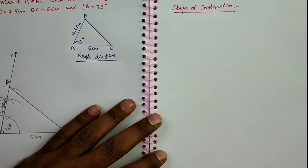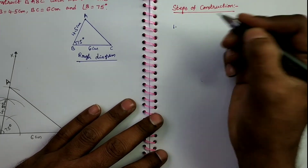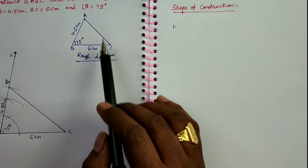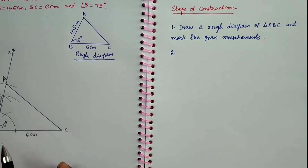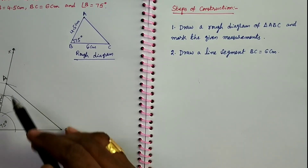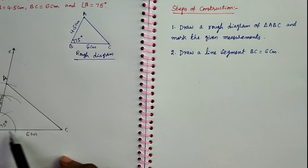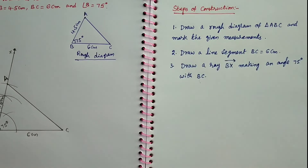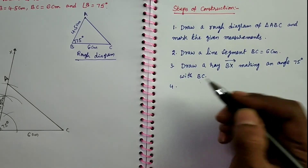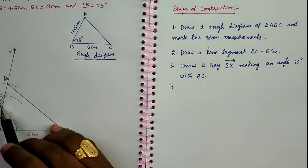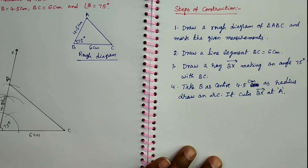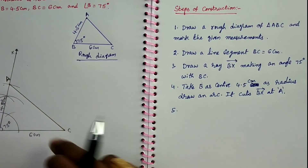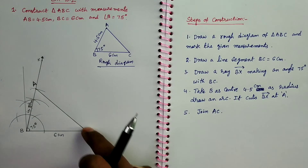Steps of construction: Step 1 — Draw a rough diagram of triangle ABC and mark the given measurements. Step 2 — Draw a line segment BC = 6 cm. Step 3 — Draw a ray BX making an angle of 75 degrees with BC. Step 4 — Take B as center, 4.5 cm as radius, draw an arc; it intersects ray BX at A. Step 5 — Join AC. Therefore, the required triangle ABC is constructed.